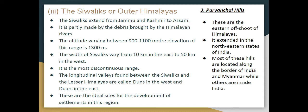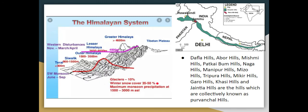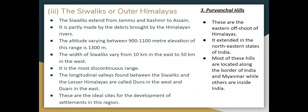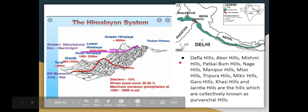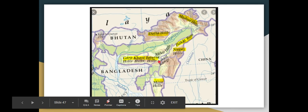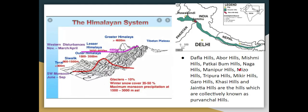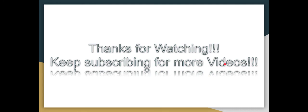Next are the Purwanchal Hills. The Purwanchal Hills are the eastern offshoot of the Himalayas. They run along the eastern states, and the Naga Hills form the border with Myanmar. The hills include Dafla, Mishmi, Patkai Bum, Naga Hills, Mikir, Mizoram, Garo, Khasi, Jaintia, Manipur Hills, Tripura Hills, and Abor Hills. Like, share, subscribe. Thanks for watching.